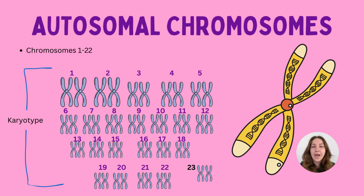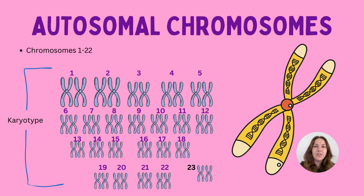Let's have a look at a karyotype of an individual. A karyotype essentially just refers to all the chromosomes of an individual — chromosomes one to 23 in the pairs we've discussed. We'll come on to chromosome 23 in a moment and how this can determine if someone is a man or a woman. But first, chromosomes one to 22 are called the autosomal chromosomes, which are nothing to do really with the sex of an individual.